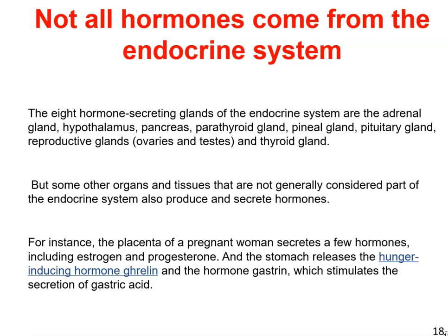Not all hormones come from the endocrine system. Some other organs and tissues that are generally not considered part of the endocrine system also produce and secrete hormones. For instance, the placenta of a pregnant woman secretes hormones including estrogen and progesterone, and the stomach releases the hunger-inducing hormone ghrelin and the hormone gastrin, which stimulates the secretion of gastric acid.